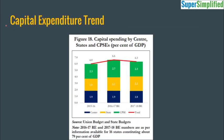Looking at capital expenditure trends: the blue color shows central spending on capital expenditure, yellow shows state capital expenditure, and green shows capital expenditure by CPSEs. States and the center have not contributed much to the increase in capital expenditure in public investment, but CPSEs have contributed more in 2016-17.